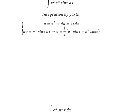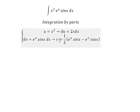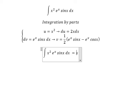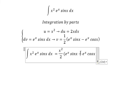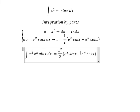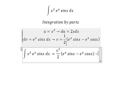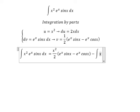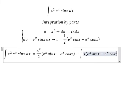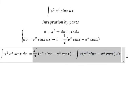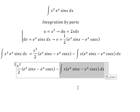Now going back to the original, we have u times v, which gives us x squared over 2 times this result. Minus du times v — the 2 divided by 2 cancels. Now we just have x with these two remaining integrals.